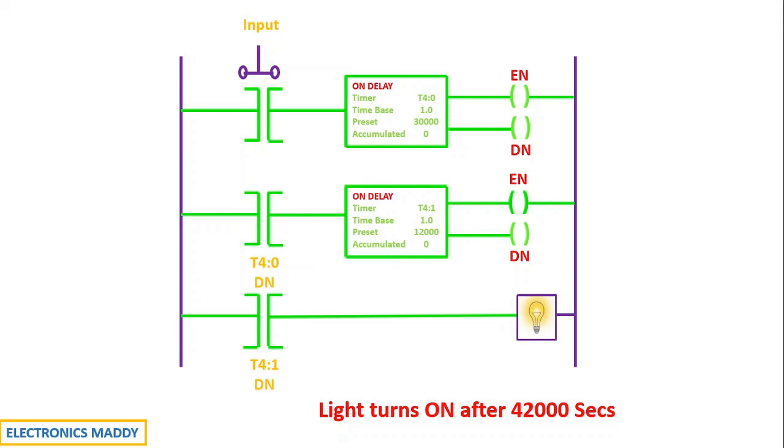if we want to count values more than 32,767 seconds, then we have to go for an additional timer. And that can be achieved by using cascading. And that is why we need the concept of cascading and it is popularly used in a lot of different applications.